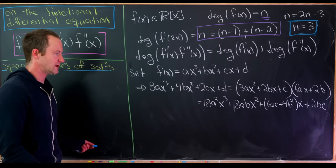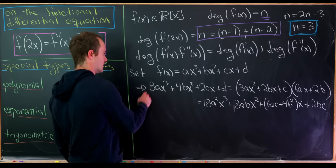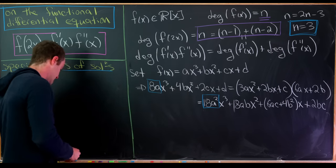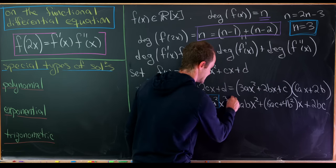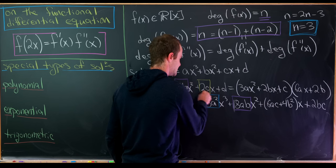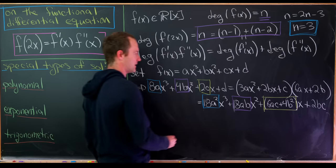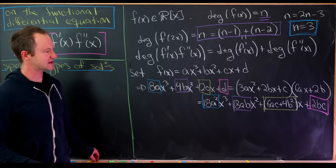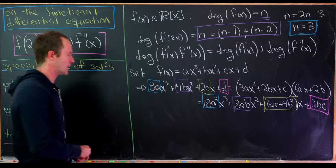Setting coefficients equal on both sides gives a system of four equations: 8a = 18a², 4b = 18ab, 2c = 6ac + 4b², and d = 2bc. That's four equations in four unknowns. Let's solve them one at a time.